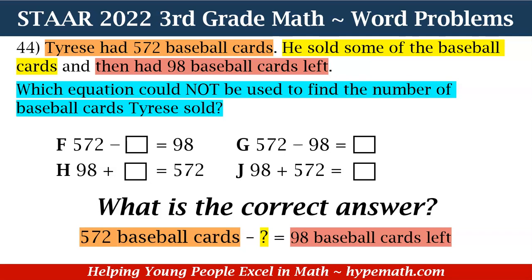Now let's look at H: 98 plus a square equals 572. Yes, I could use this equation to find how many baseball cards he sold, because adding the ones he has left plus the ones he sold equals the total — 572. So H is a correct equation for finding the number of baseball cards sold, and therefore it is also not the correct answer to this problem. We're looking for the one equation we could not use.